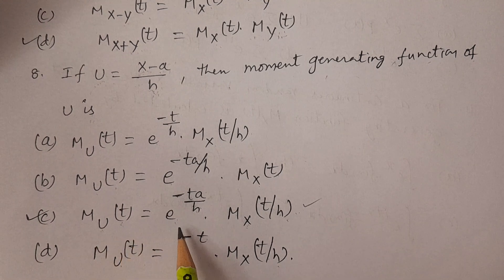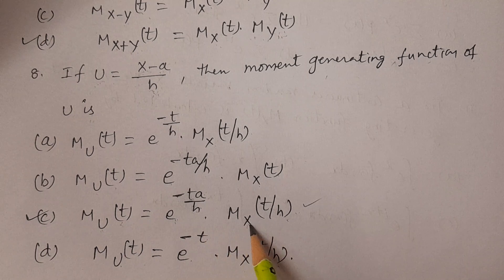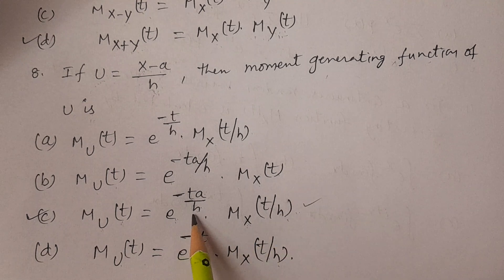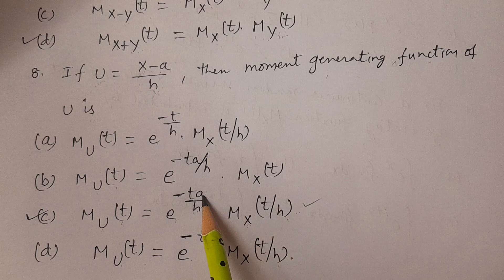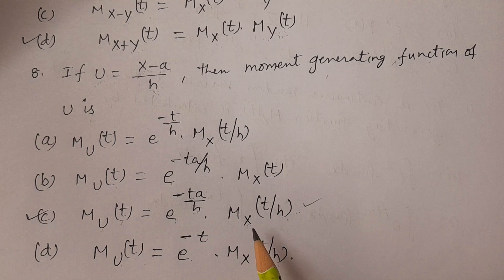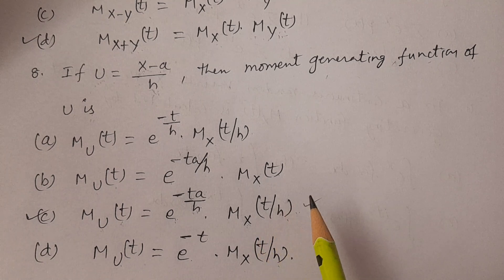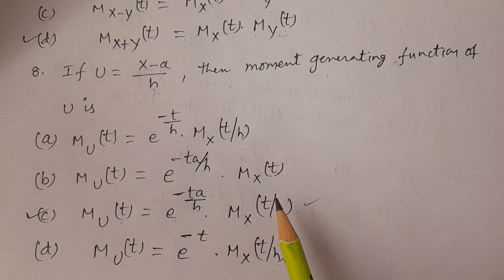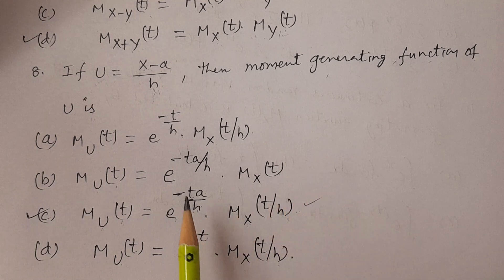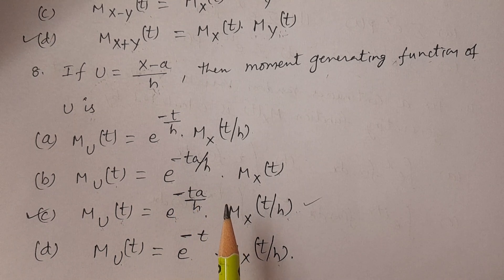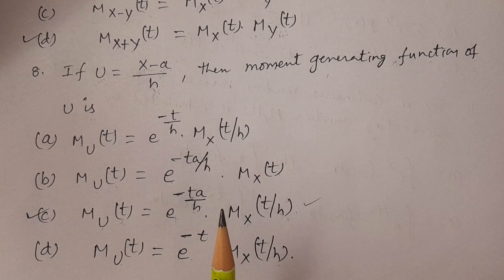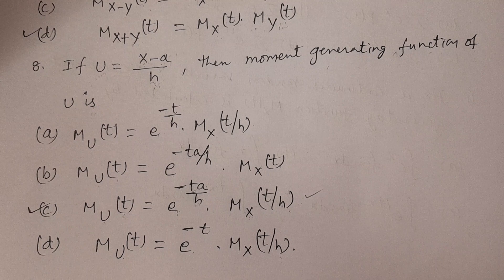The answer is MU(t) = e^(−ta/h) · MX(t/h). The moment generating function is not independent of changing the origin and scale. I hope you understand. We will discuss some more questions in the next class. Thank you very much.